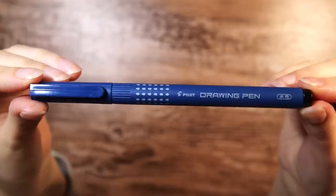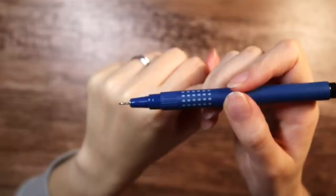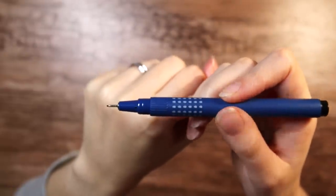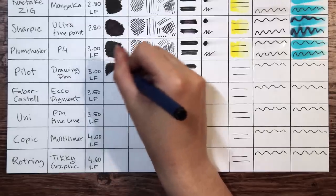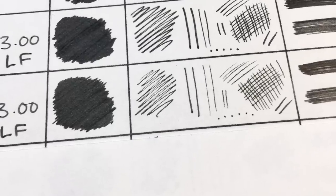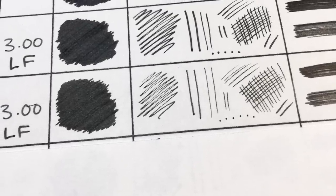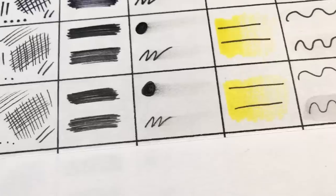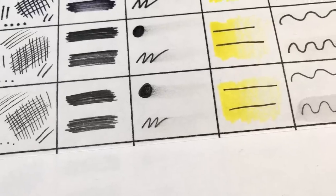Next up is the Pilot drawing pen for about $3 and it's lightfast. It performs very similar to the Plumchester pen in the pigment test, it might be just a tiny bit lighter. It passes in both the water and the alcohol test.